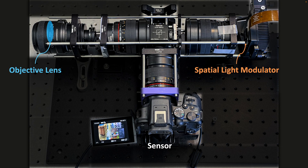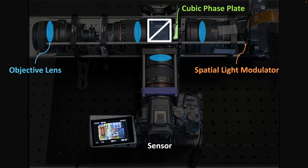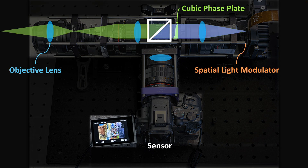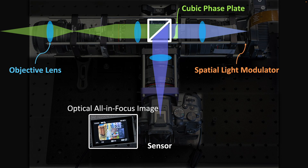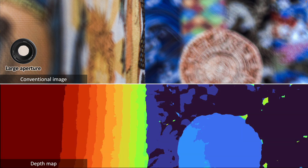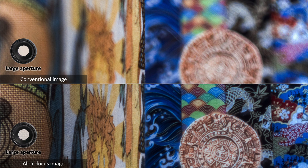Our prototype shown here folds the optical path using a beam splitter. Light enters the objective lens, reflects from the SLM, and hits the sensor. The result is a spatially focused programmable camera that can optically capture an autofocus image even when the scene is highly non-planar. For any scene in the wild, when given a depth map, we can program the lens to spatially vary its focus and capture the autofocus image.